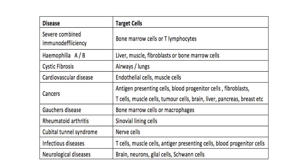Here are some examples of diseases and target cells. For severe combined immunodeficiency, the target cells are bone marrow cells or T lymphocytes. For hemophilia, it is the liver, muscles, fibroblasts or bone marrow cells. For cystic fibrosis, the lungs and airways. In case of cancers, there are antigen presenting cells, blood progenitor cells, fibroblasts, T cells, brain, liver, pancreas etc.